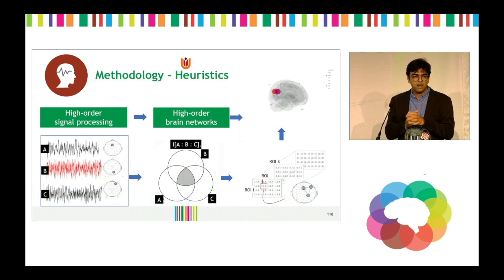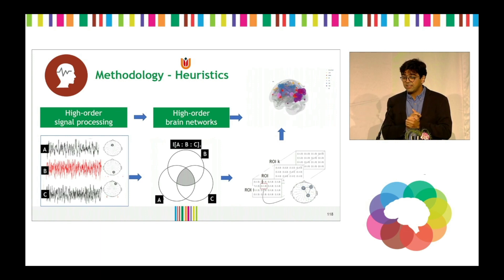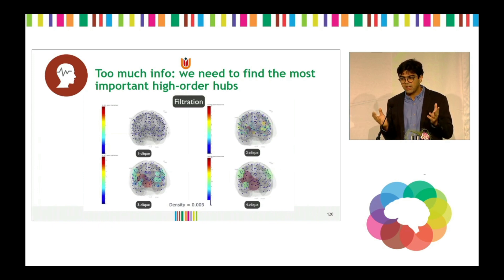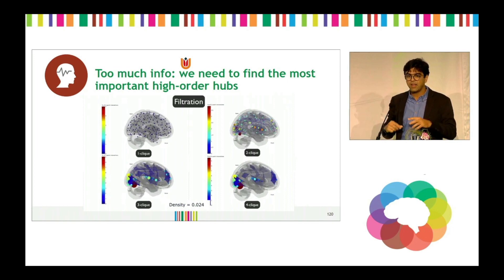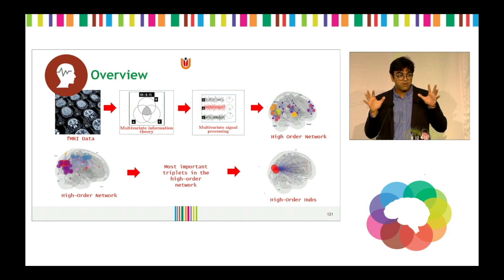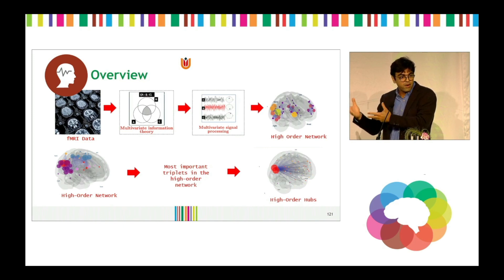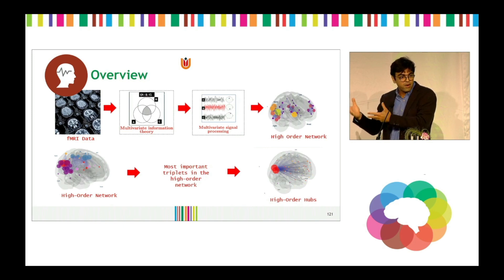Instead of looking at pairs of signals, we consider three signals simultaneously and check whether those three brain areas share information and communicate simultaneously. Instead of storing these in a matrix, we store them in a 3D matrix, so areas A, B, C in the brain have communication values X, Y, Z. From that you can build a so-called higher-order network, where you see nodes and links at the lower level, but triplets, quadruplets, and so on at higher levels. You also need to develop a pipeline to identify the most important interactions, since you can cover the brain with triplets and quadruplets very quickly. The project starts with the signal, identifies the most important interactions beyond pairs, creates a hypergraph or higher-order network, and then checks for the most important triplets and their meaning.